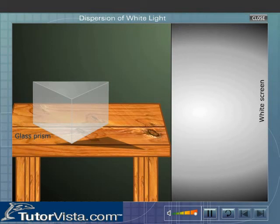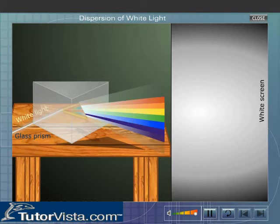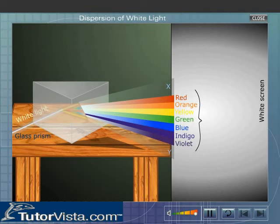When a narrow beam of ordinary white light is passed through a glass prism, different wavelengths travel through the glass at different speeds and appear as a continuous broad band of different colors.